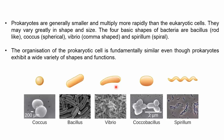Prokaryotes are generally smaller and multiply more rapidly than eukaryotic cells — for example, E. coli divides within 18 minutes, while eukaryotic cells take a much longer time. The four basic shapes of bacteria are: bacillus (rod-like), coccus (spherical), vibrio (comma shape — e.g., Vibrio cholerae), and spirillum (spiral shape). There is also coccobacillus, which is a combination of coccus and bacillus — not completely round, not completely rod-shaped, but oval-like.